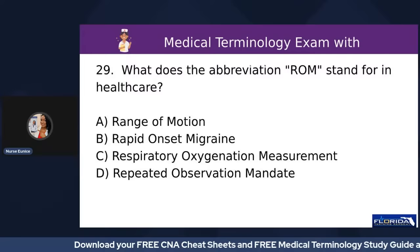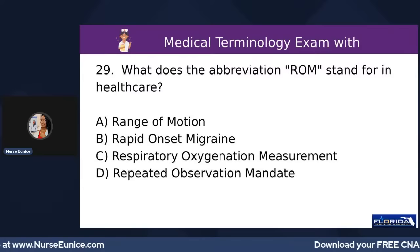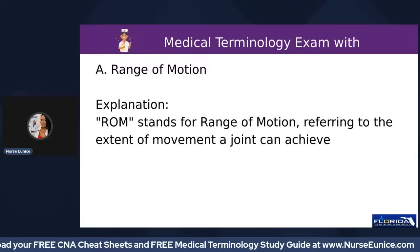Number twenty-nine: what does the abbreviation ROM stand for in healthcare? A) Range of Motion, B) Rapid Onset Migraine, C) Respiratory Oxygenation Measurement, or D) Repeated Observation Mandate. Everyone, ROM stands for range of motion exercises — that is the correct response.